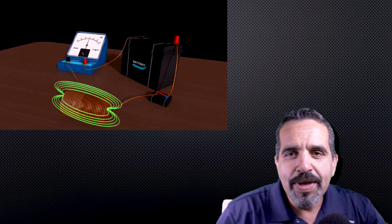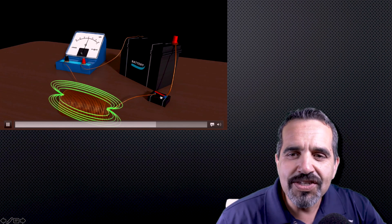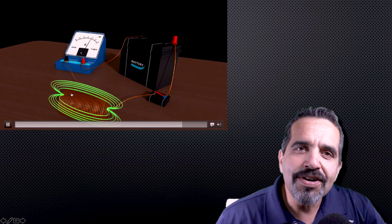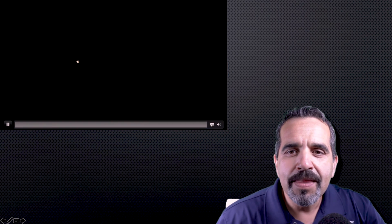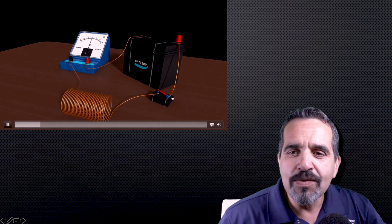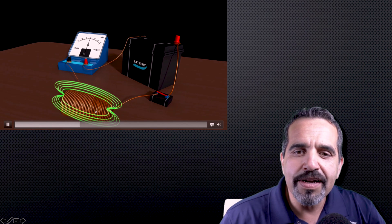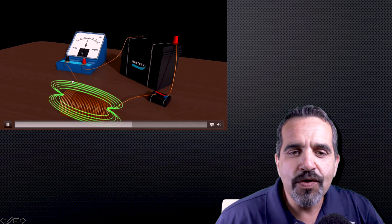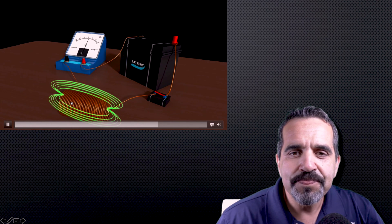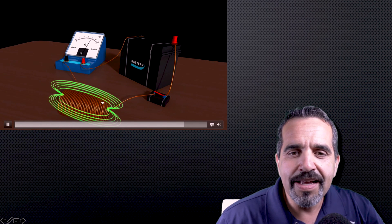So here we have a DC circuit. We have a DC power source, a switch, an inductor, and an ammeter. And in this circuit, once the switch closes, you can see current is flowing through the inductor, and it's creating this magnetic field. Once the inductor is saturated, you can see the ammeter rises.